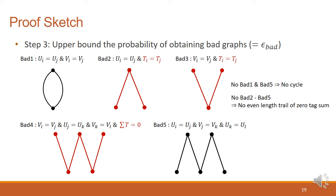As a result, without the events Bad 1 and Bad 5, there cannot exist cycles, and without Bad 2 to Bad 5, there cannot exist even length paths with zero-tag sum. So after we find the probability to have these bad events, we can upper bound the value epsilon-bad.